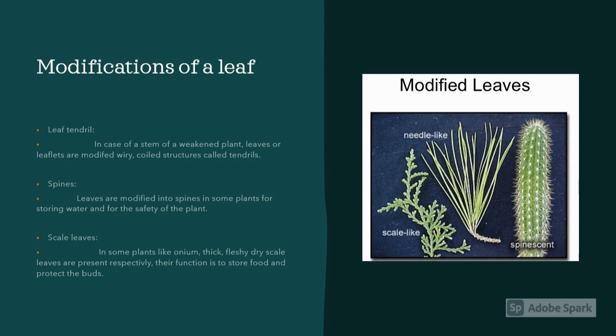Now as we talked about the types of leaf and the functions of it, let's talk about the modifications. Some of the common modifications of leaf are tendrils — coil-like structures which help the plant to climb — spines for the safety of the plant, and scaly leaves for storing food.